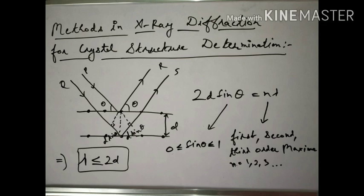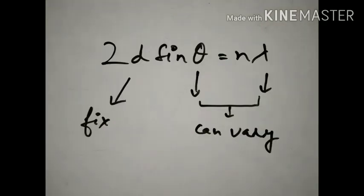An important point to note: since sin θ varies from 0 to 1, and d is fixed for a given crystal, the wavelength λ must be less than or equal to 2d to obtain a diffraction pattern. This condition is only satisfied by X-rays, because the wavelength of X-rays matches this condition. That is why X-rays are used. Only the rays that satisfy Bragg's equation — 2d sin θ = nλ — will result in a diffraction pattern.